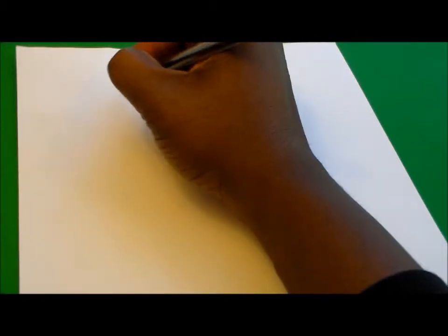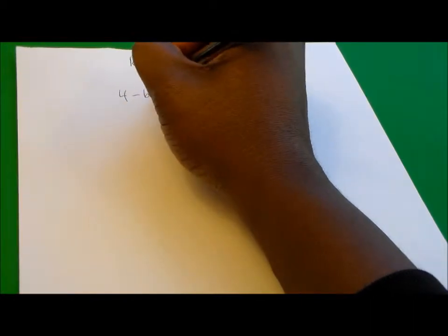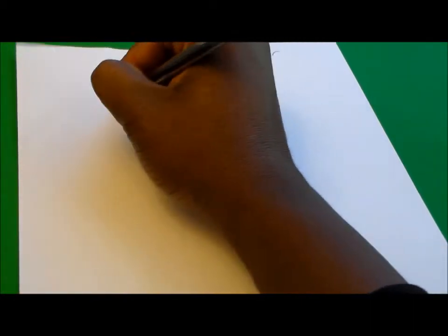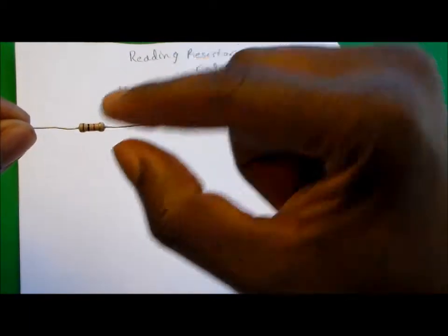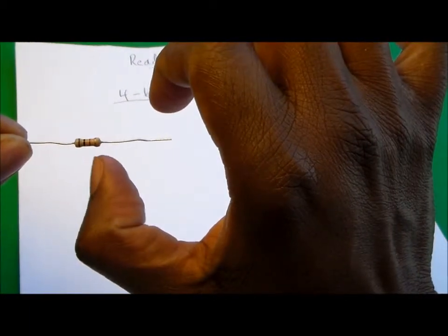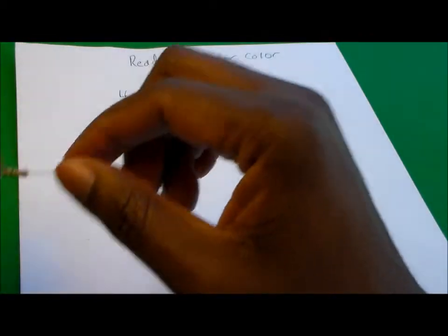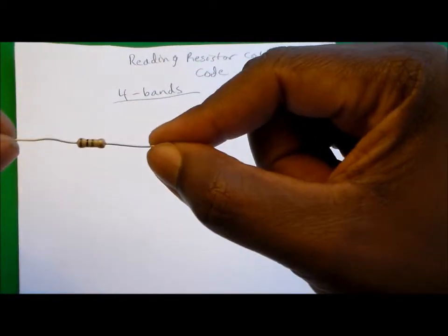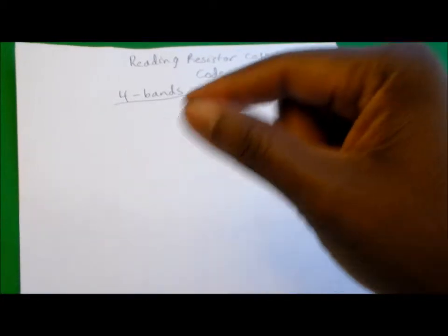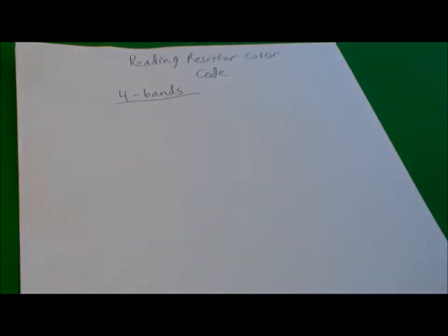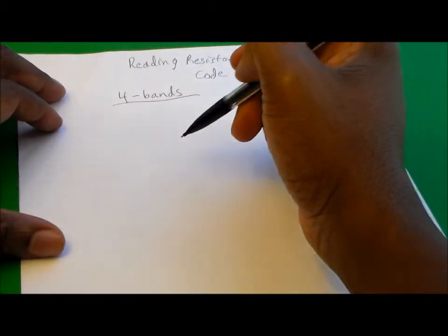Most resistors that you encounter will have four bands on them. If you look on this resistor here, you'll notice there are four color bands on the resistor. How do you go about reading those color bands? Well, first of all, we need to understand what each of those colors means.